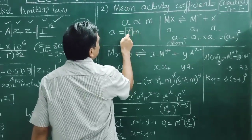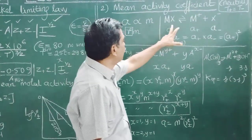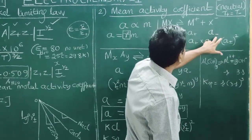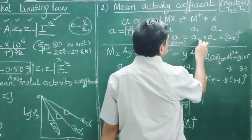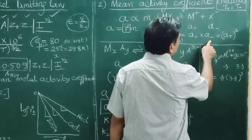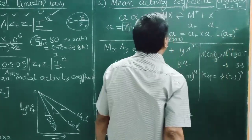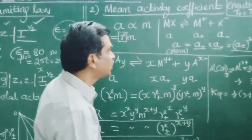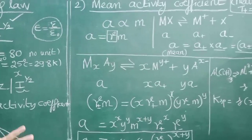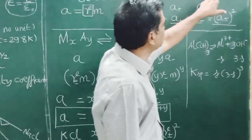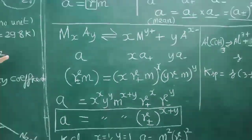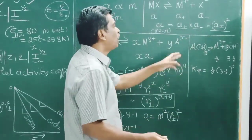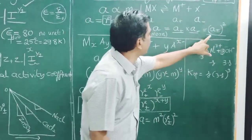For a simple electrolyte MX dissociating into M⁺ and X⁻, the mean activity a± squared equals the product of a₊ and a₋. We use mean activity rather than individual ion activities because in an electrolytic solution the total positive charge equals the total negative charge, so individual ion activities are not separately needed.